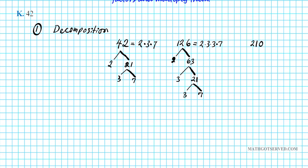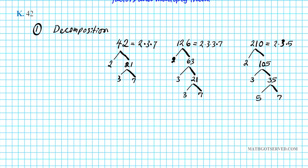Now let's look at 210. It's even, so factor out 2: 2 times 105. The digit sum of 105 is 1+0+5=6, and 3 divides 6, so 3 divides 105: 3 times 35. And 35 is 5 times 7, both prime. So the prime factor decomposition of 210 is 2 times 3 times 5 times 7.